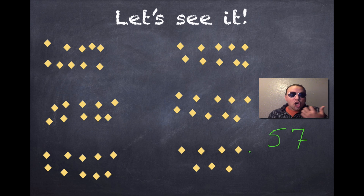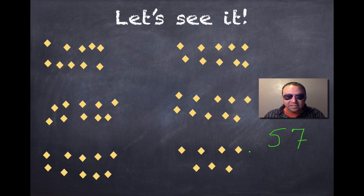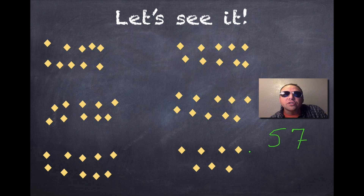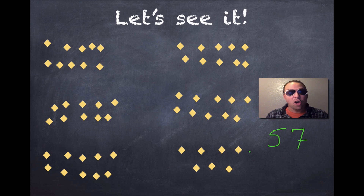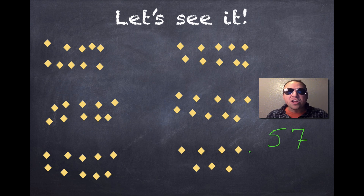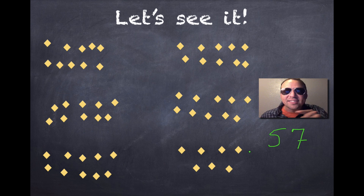I want you to try this. Go get yourself a cup of pennies, or maybe a cup of buttons, or maybe you can use cereal — cereal is a good one. Get a bowl of cereal, carefully dump it out, and use grouping by 10s to count how many pieces of cereal or pennies you have. Skip counting in real life — it gets me excited. I will see you next time.